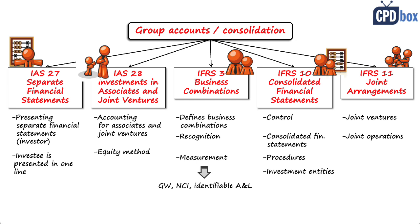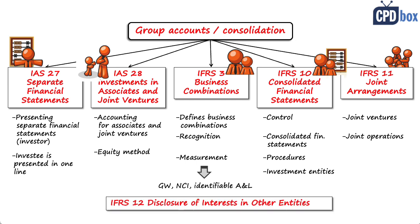Finally, there's IFRS 12, Disclosure of Interests in Other Entities. As its title says, it prescribes all the necessary information that you need to disclose about subsidiaries, associates, joint arrangements, and other entities.